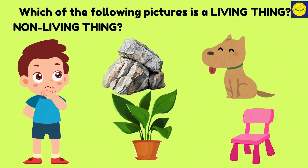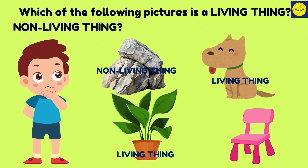Day 2. Which of the following pictures is a living thing? Which is a non-living thing? Here are the answers. A rock is a non-living thing. A dog is a living thing. A plant is a living thing. A chair is a non-living thing.